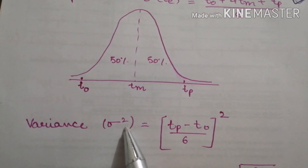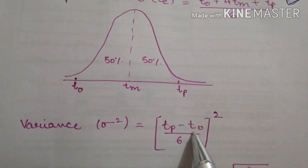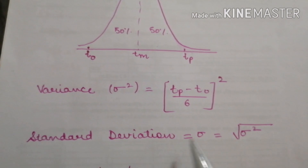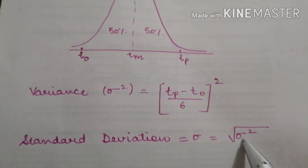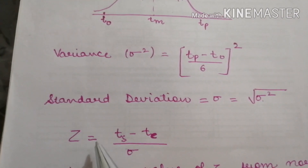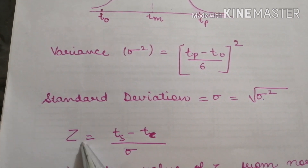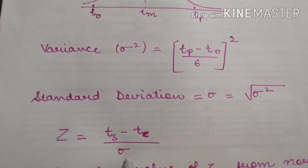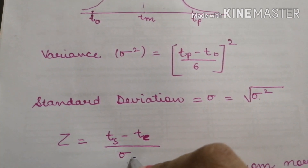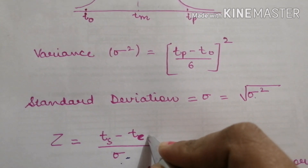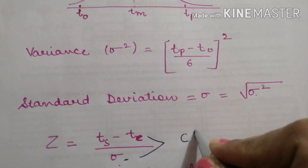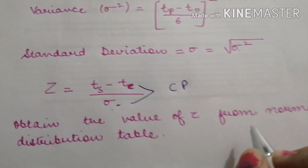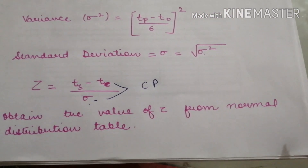We denote variance by sigma squared, and the formula is (Tp minus T0) divided by 6, whole squared. Standard deviation is the square root of variance. The formula for calculating the probability is Z equals scheduled time period minus expected time period, divided by sigma. This sigma and Te will be for the critical path — we consider critical path values, then obtain the Z value from the normal distribution table.